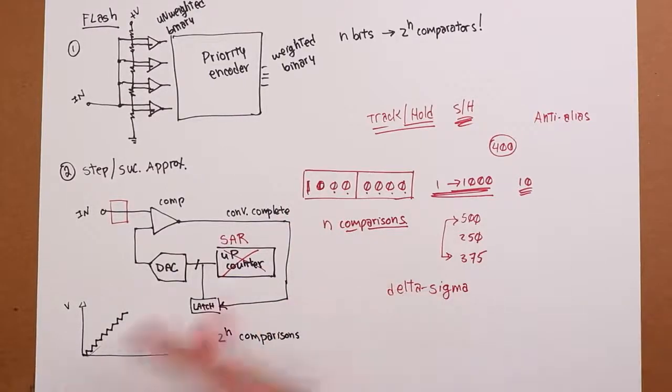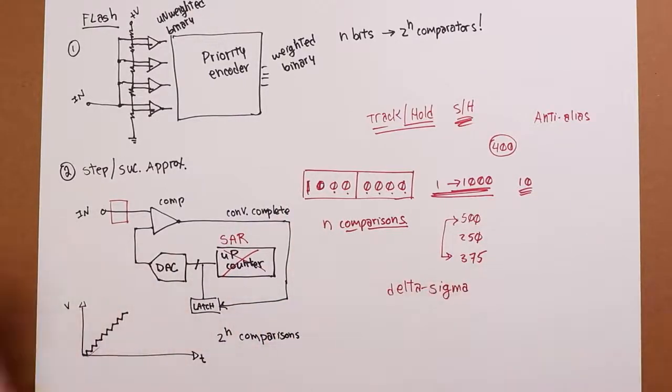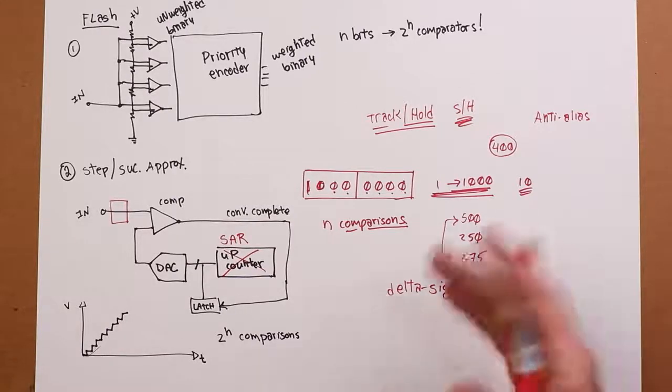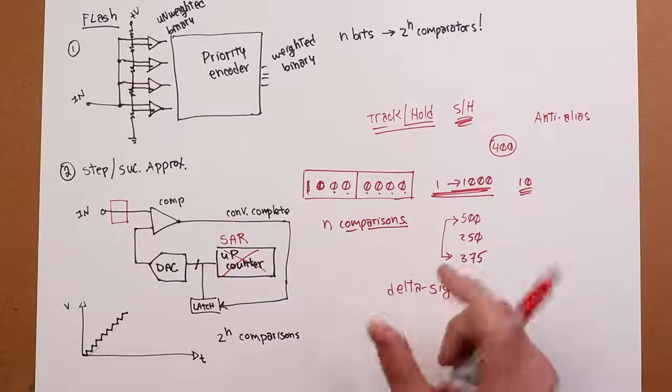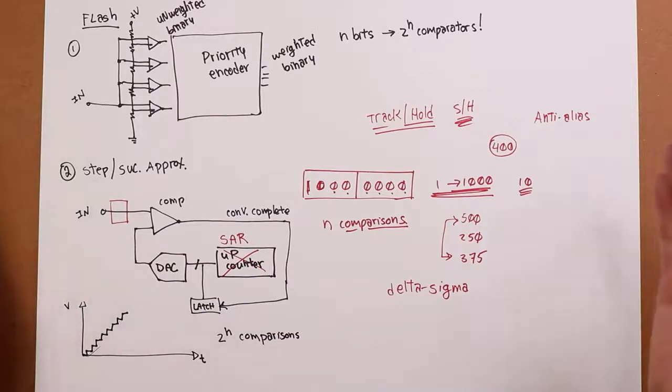And through a mathematical process, we can derive one high resolution sample. So this thing might be oversampling by a factor of 256 or something like that compared to the Nyquist-Shannon sampling rate. So that's something else that we'll see. All right. But that gives you a pretty good idea of what's out there and what we're going to do.